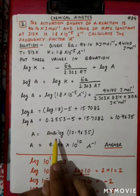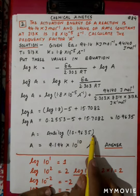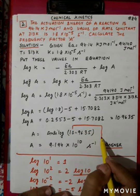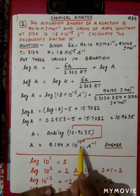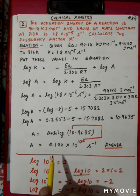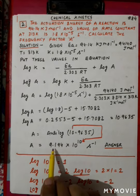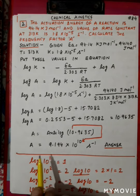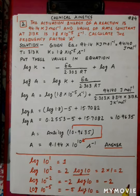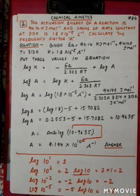Now to find A: take the anti-log of 10.9635. The digit before the decimal becomes the power of 10, so this is 10^10. Take anti-log of 0.9635 from the anti-log table — you will see 9194, place the decimal after one digit to get 9.194. Therefore frequency factor A = 9.194 × 10¹⁰ per second. I'm very sure this is clear — please pause and rewind before going to the third numerical.